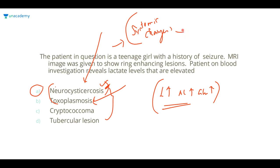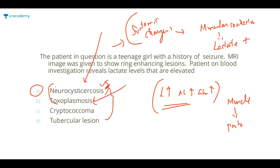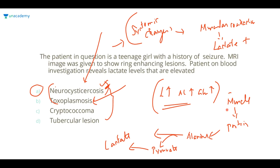Neurocysticercosis can cause systemic changes and muscular contraction. If this muscular contraction persists for a long time, the body converts pyruvate into lactate using anaerobic glycolysis — that is why lactate is elevated. At the same time, when muscles are excessively contracted, muscle breakdown occurs, and the broken-down muscle protein is alanine. Alanine undergoes deamination to become pyruvate, so pyruvate shifts to lactate.